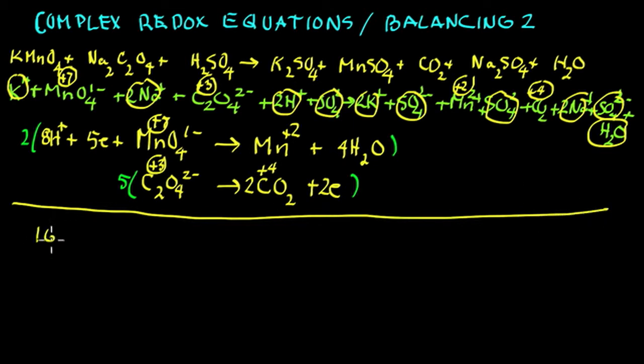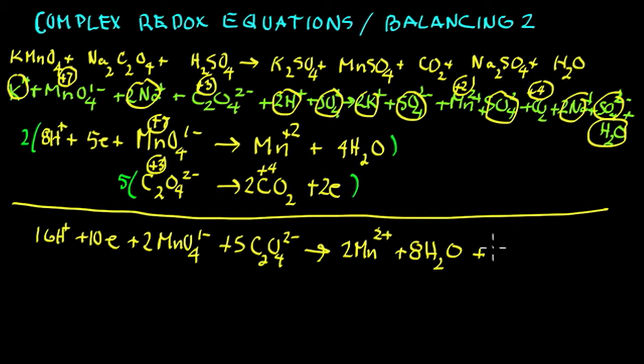We've got 16 hydrogen ions, 10 electrons, 2 permanganate. Notice I almost dropped the oxidation numbers. 5 oxalate 2- ion. On the product side we have 2 manganese 2+. 2 times 4 is 8 water. And 5 times 2 is 10 carbon dioxide and 10 electrons. So the electrons are now completely out. They've been exchanged. That's what we want to do.